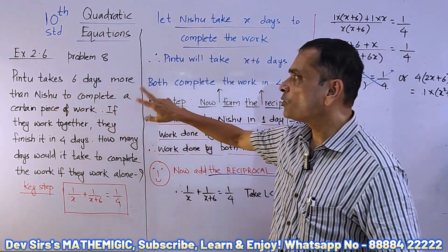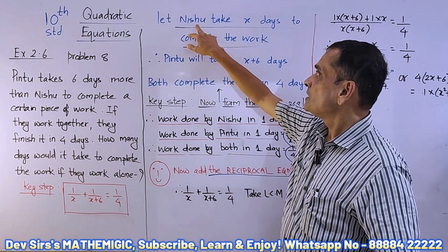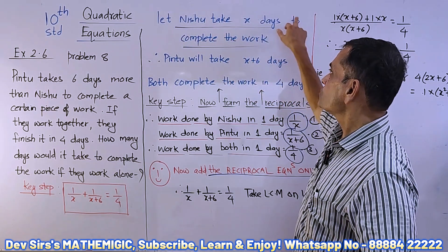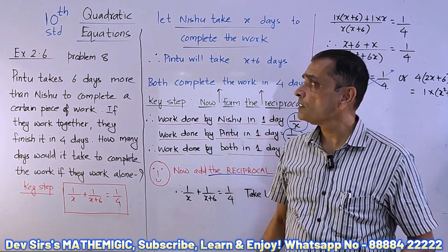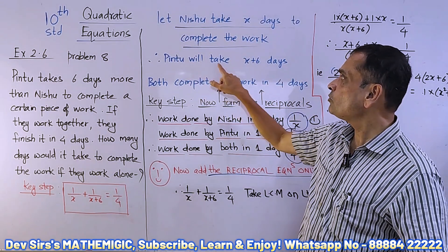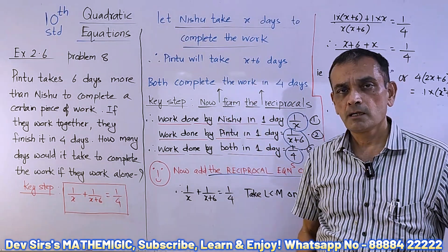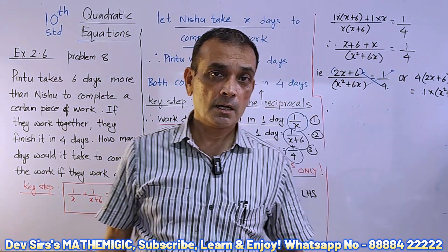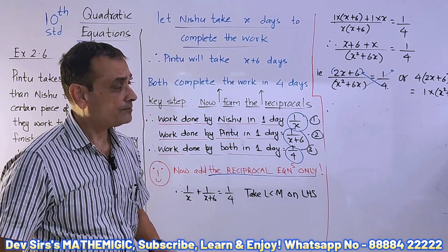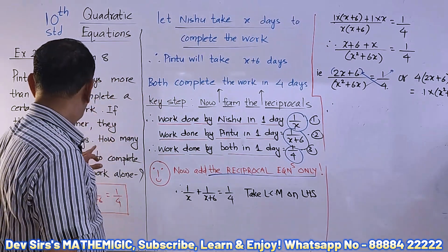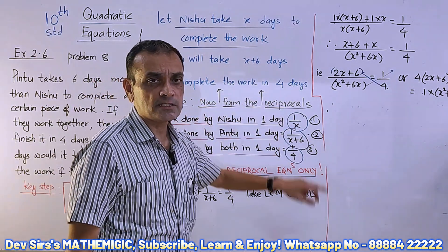Pintu takes six days more than Nishu, as written. So what we do is: let Nishu take x days to complete the work. Then Pintu will take x plus six days — six days more means x plus six. Both of them together complete the work in four days.